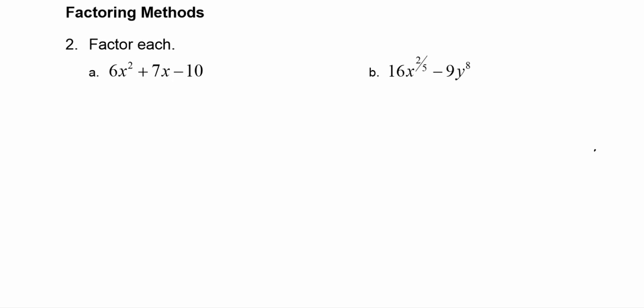Now if we take the ac term, 6 times negative 10 is negative 60, and we write down the b term, which is positive 7. These numbers are going to help us figure out how to factor the trinomial.